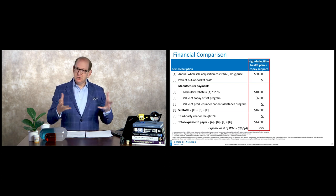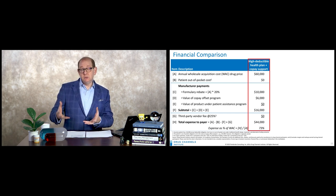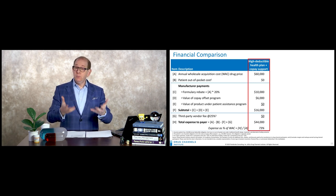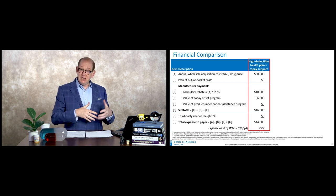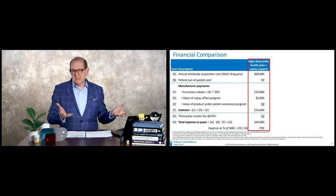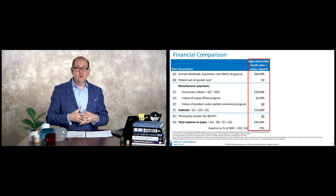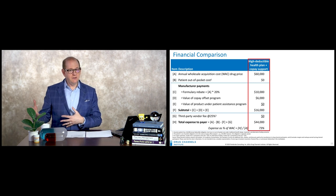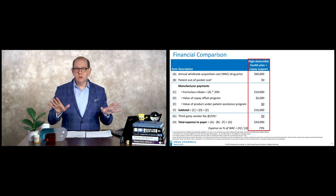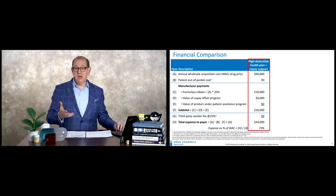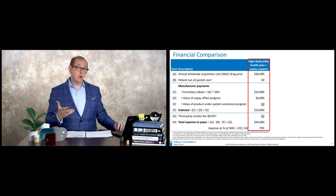In the first scenario, the patient has a deductible of $6,000. However, the manufacturer through copay support is going to pay that $6,000, so the patient has nothing out of pocket. The manufacturer pays a rebate — I'm assuming 20% for the sake of this example — and also pays that copay. So the payer's net cost is essentially the list price minus what the manufacturer has contributed. The payer ends up paying a little less than three-quarters of the wholesale acquisition cost.